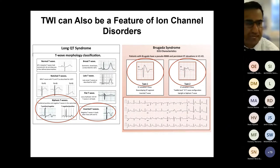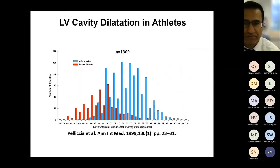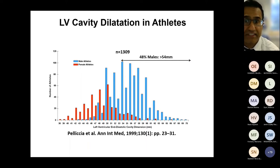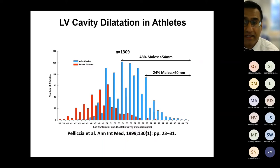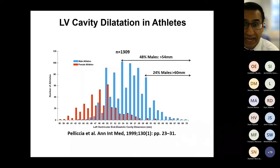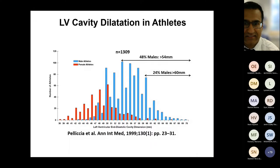This is data from just over 1,300 Italian Olympic athletes — a bar chart showing the distribution of LV cavity dimensions. A significant proportion of athletes exhibit LV cavity dilatation. Almost a quarter of male athletes in this cohort exhibited LV cavity dimensions exceeding 60 millimetres, which overlaps with the phenotype of dilated cardiomyopathy. In practice, many of these athletes also have resting sinus bradycardia, and LV function at rest looks low normal with an ejection fraction of 50 to 55 percent, because with such large stroke volumes the heart doesn't need to beat as vigorously at rest — but it can really look like a DCM.